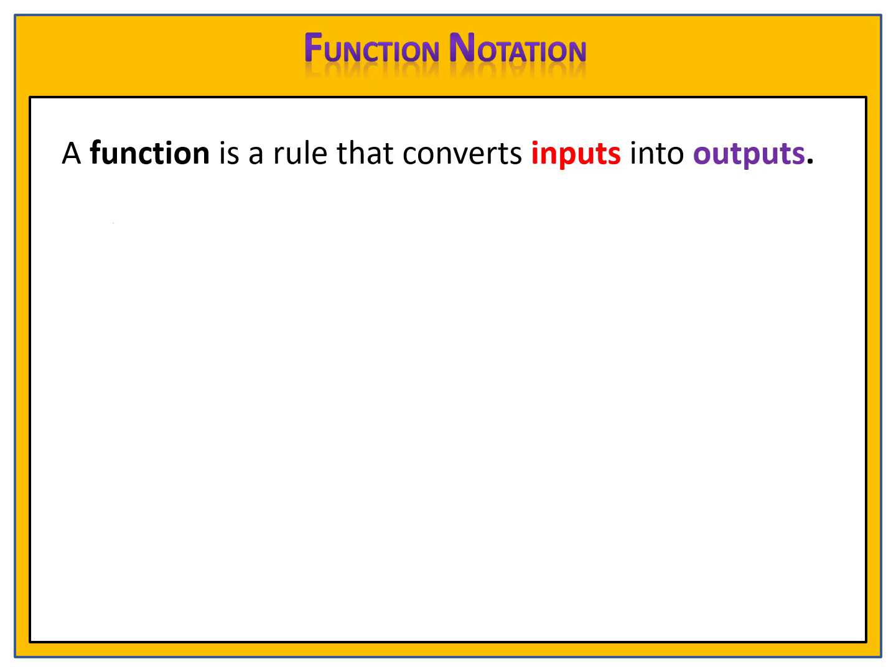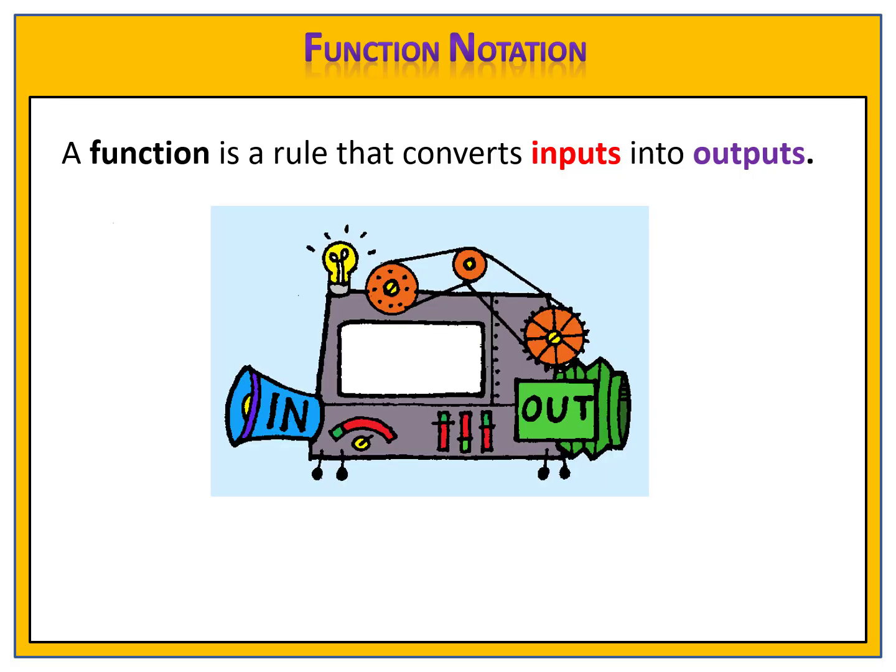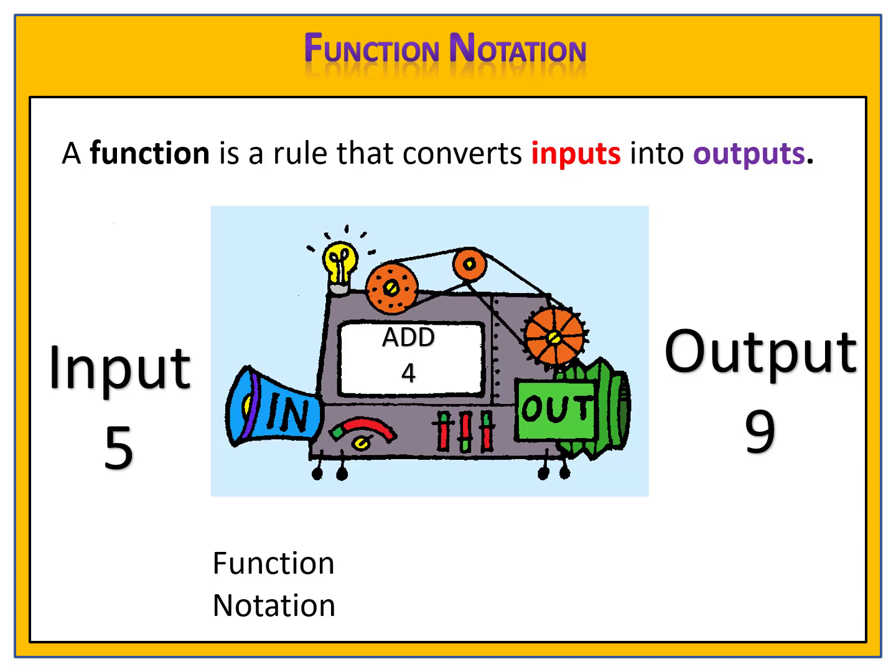A function is a rule that converts inputs into outputs. A lot of people like to think of a function as a machine, where you input a number, the machine does something to that number, for instance adds 4, and then gives a number out as an output. Often, we use function notation to show the rule or the process that the machine is using to convert the input into an output.